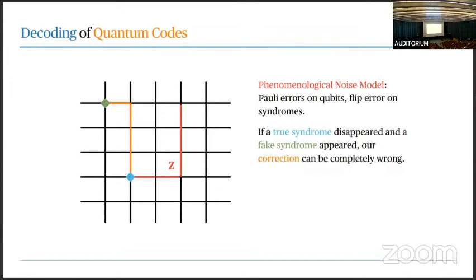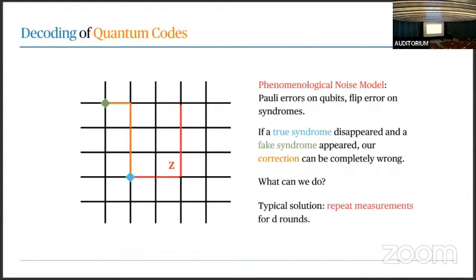This example demonstrates that in the more realistic setting — where syndromes could be wrong — the toric code really cannot protect against this kind of error. If you flip a few wrong syndromes, you get a completely wrong correction. A very natural and standard solution is to simply repeat the measurement for d rounds. If you're not sure about one round of measurements, do it again and again up to d rounds to be more certain. In the toric code this leads to space-time decoding: matching in 3D (two dimensions of space, one of time).